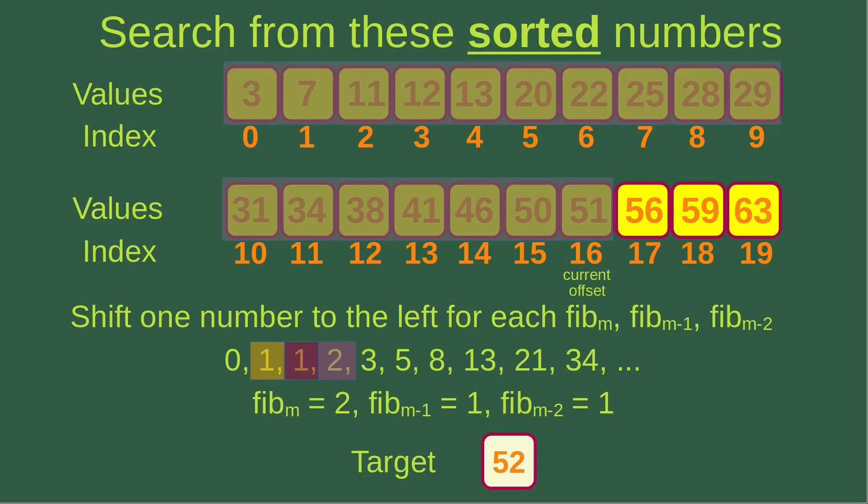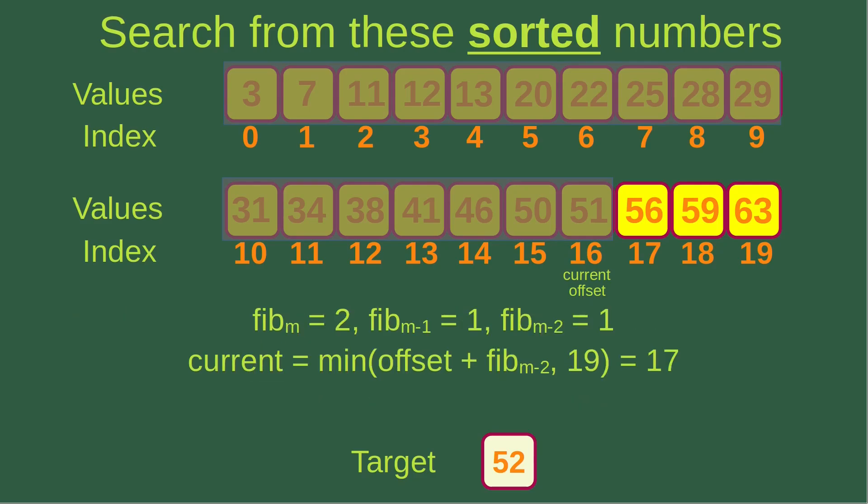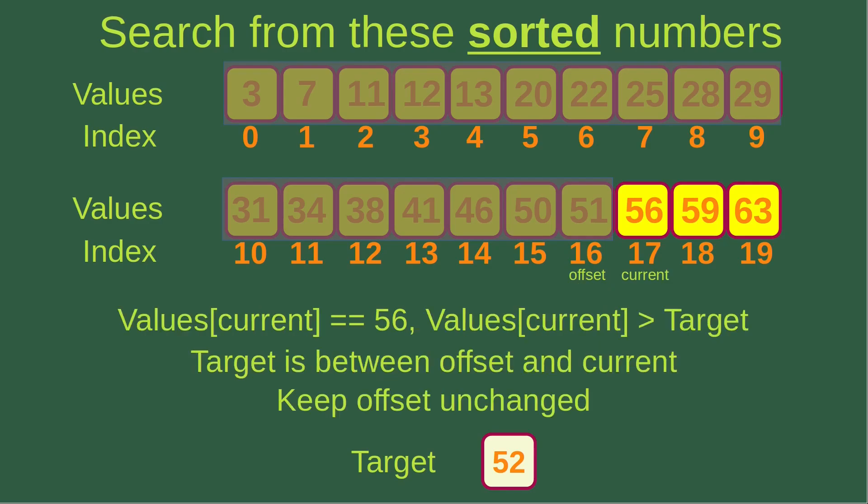I shift one number to the left: Fibonacci M is 2, Fibonacci M-1 is 1, and Fibonacci M-2 is 1. Offset is 16 and Fibonacci M-2 is 1, so the sum is 17. Comparing 17 to 19 gives 17 as the smaller value, so current becomes 17. The current index gives me a value of 56, which is larger than the target 52, so the target should be between the offset and current. I keep the offset unchanged.